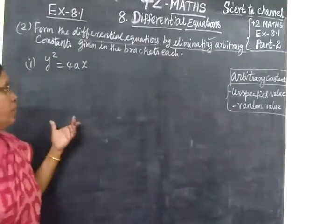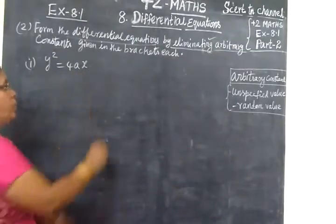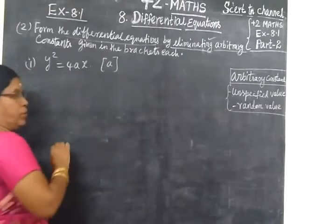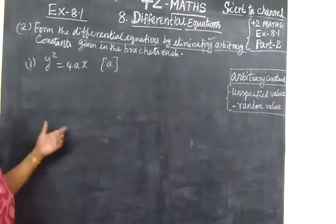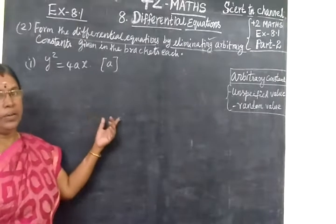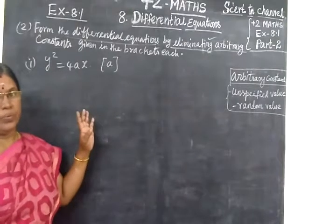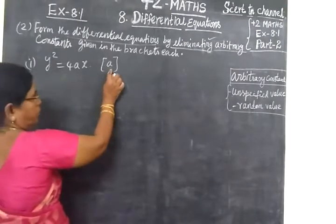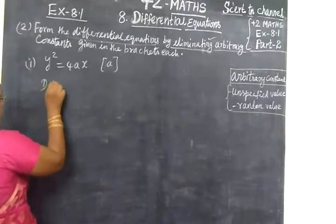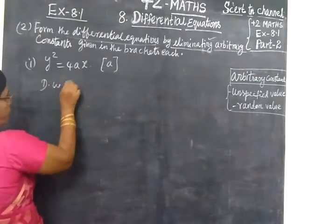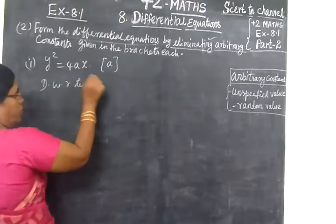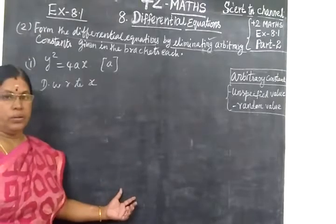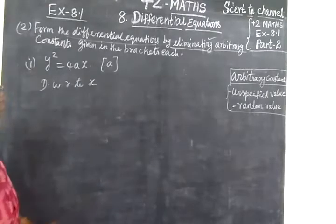So, the answer is written. In the arbitrary constant, drag it into position. So, when you write the differential equation, A should not come. That is, we remove it — if there is one arbitrary constant, differentiate with respect to x one time. If there are two arbitrary constants, we differentiate two times.